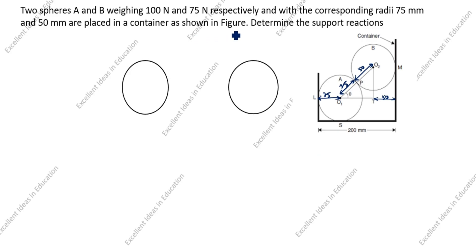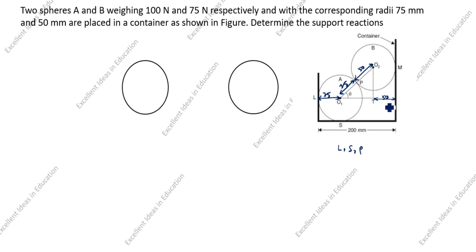They are placed in a container as shown in the figure. This is the container with a width of 200 mm. Determine the support reactions. In this drawing you can see the support reactions we need to find: L, S, P, and M. These are the support reactions. Now how will we find this value? The full width is 200 mm.